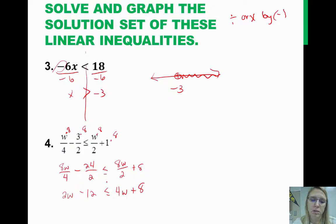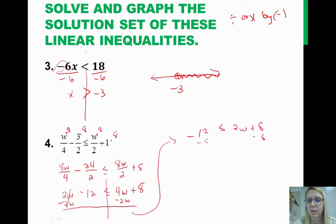Now I need to get all my w's to one side of the inequality. So I'm going to subtract 2w. I'm going to put my answer up here because I'm running out of room. So this cancels out. I'll have negative 12 is less than or equal to 2w plus 8. Now I'll subtract the 8, and I have negative 20 is less than or equal to 2w. And now I can divide by 2. So I have negative 10 is less than or equal to w.